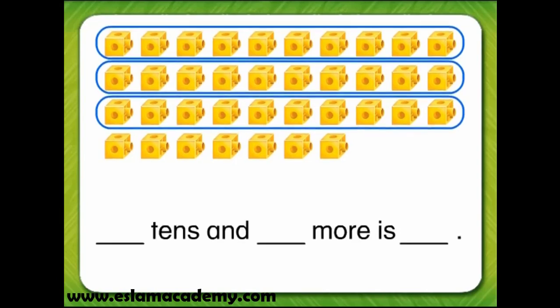Let's count the groups of 10. 1, 2, 3. There are 3 groups of 10 and 7 more cubes remain. 3 groups of 10 is 30 and 7 more is 37.